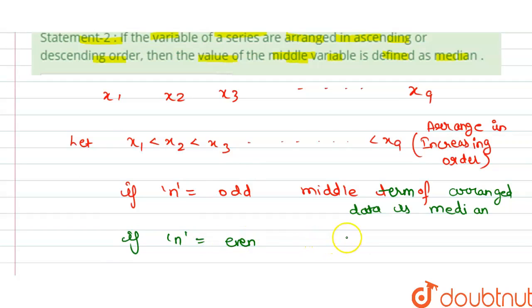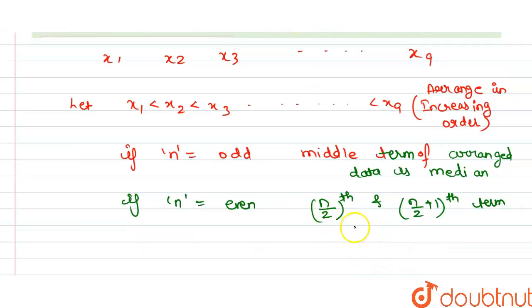then the (n/2)th term and (n/2 + 1)th term, we add them: (n/2)th + (n/2 + 1)th divided by 2.